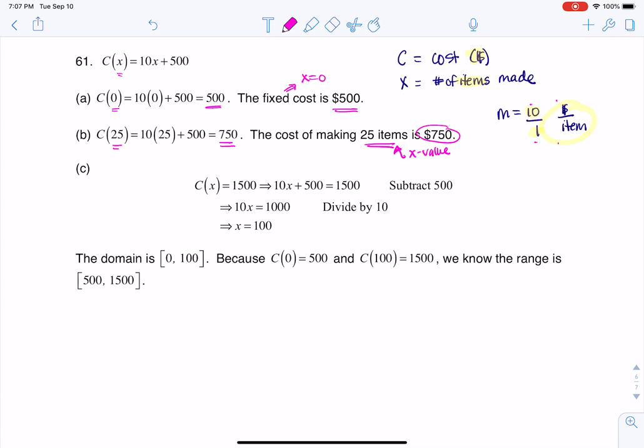Now, the last part, they set you up a little bit differently in part C. They don't give you an x value to start with. They actually give you a cost to start with. So they started me with $1,500. They said, suppose the maximum cost allowed is $1,500. So what are the domain and the range of the cost function?